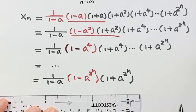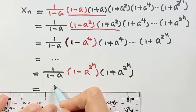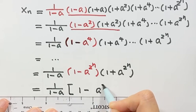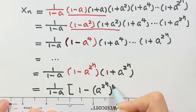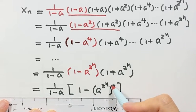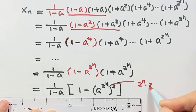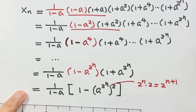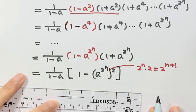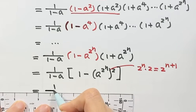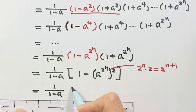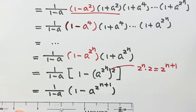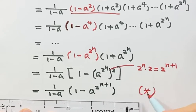Now we combine these last two terms together. We get 1 minus a to the power 2 to the power n, then squared. The resulting power is 2 to the power n times 2, which is just 2 to the power n plus 1. So the simplified expression for x_n is 1 over 1 minus a to the power 2 to the power n plus 1.